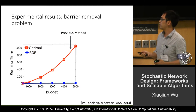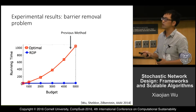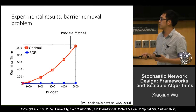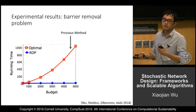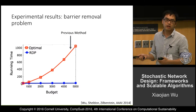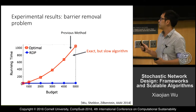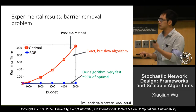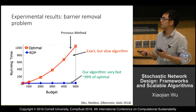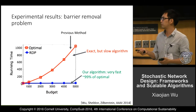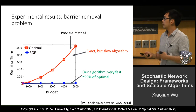Here we show some results. We compare with the previous method, which uses dynamic programming. Our algorithm is called RDP — it combines dynamic programming and a rounding strategy, which makes the algorithm much more scalable. This is a running time comparison: with different budgets, our algorithm is much faster. Our algorithm is an approximation algorithm, not an exact solver, but we observe that it produces 99% optimal solutions. We can also prove that the algorithm is FPTAS.